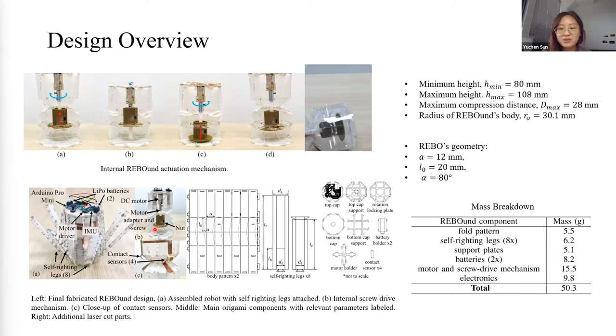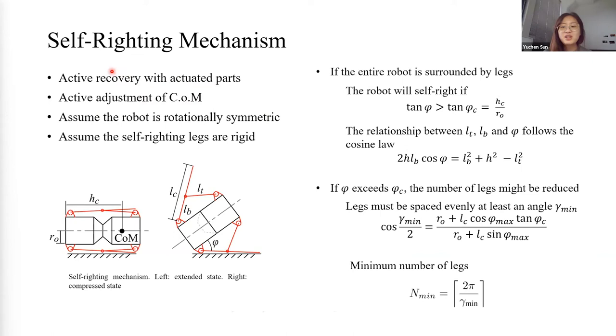So to achieve self-righting, a combination of the active and passive method is used. The self-righting legs and the body act like the four-bar linkage system. When compressing, the bottom self-righting leg generates force to push the body, lifts the ground, and the center of the mass moves close to the pivot. When the center of the mass passes a critical angle phi_c, it then self-rights as a result of gravity. Assume that the robot is rotationally symmetric and the self-righting legs are all rigid. If the entire robot is surrounded by the legs, the robot will self-right if it passes the critical angle. And the relationship between the bottom self-righting legs, the top self-righting legs, and phi follows the cosine law. If the phi can exceed phi_c, the number of legs can be reduced by this formula. And finally, the minimum number of legs can be calculated to this value.